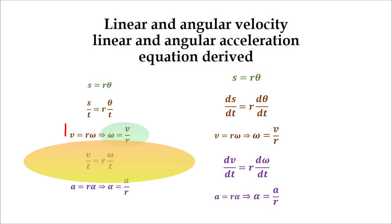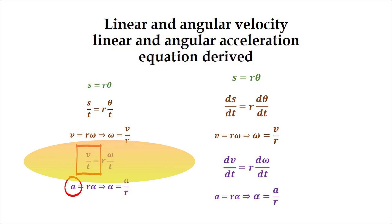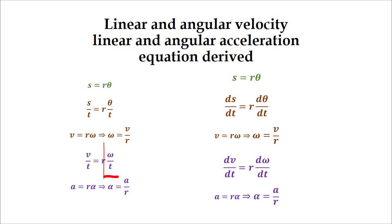Now let's derive the equation for angular acceleration. We have already derived the equation for velocity. Let's divide both sides of this equation again by t. So we will get v by t, which is equal to r times omega divided by t. Here, v by t is the rate of change of velocity with respect to time, which represents the acceleration, while on the right-hand side, omega divided by t is the angular acceleration and is denoted by alpha.